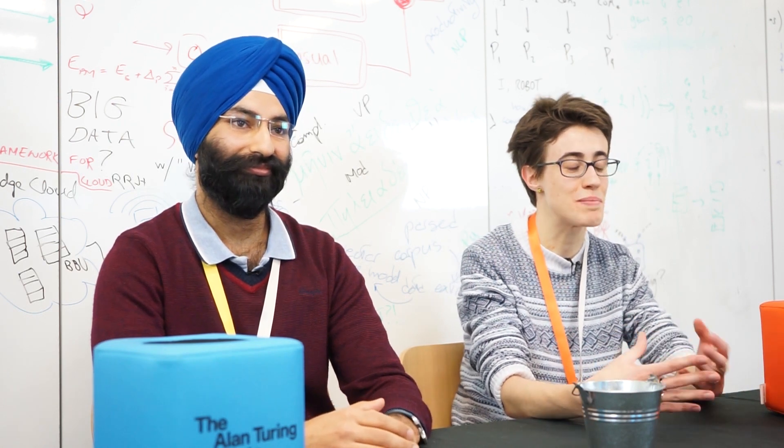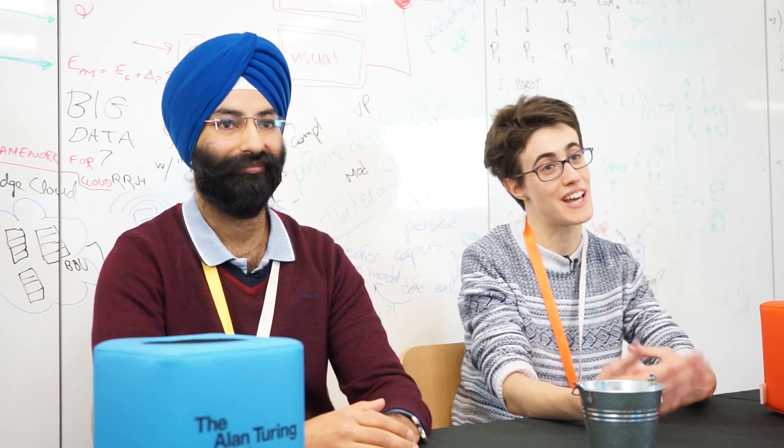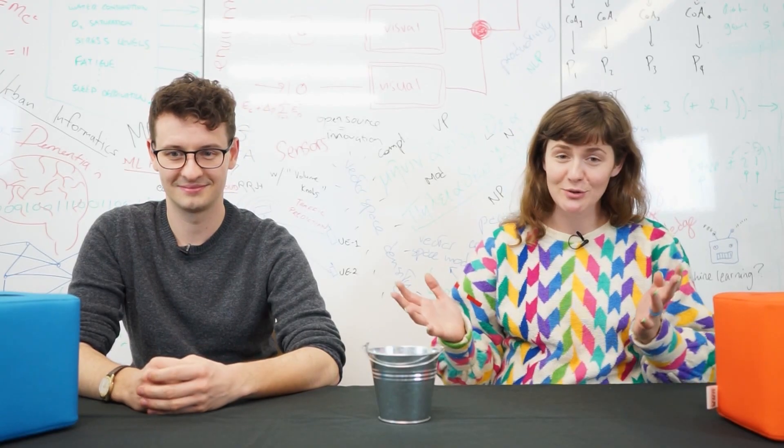I am a second year DPhil student at the University of Oxford and I am in the Faculty of Classics. I'm kind of the weird kid in the room at the Turing Institute because I work on computational modeling of language in Homer — so the Iliad and the Odyssey. I work on ancient Greek and I work on recurring syntactic structures in the Iliad and the Odyssey, and how they change and how they're flexible.